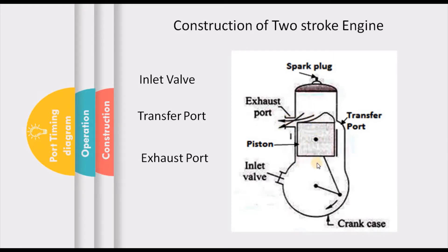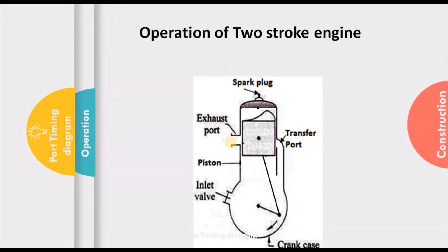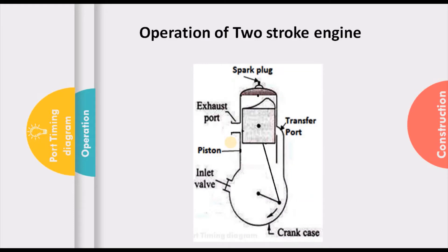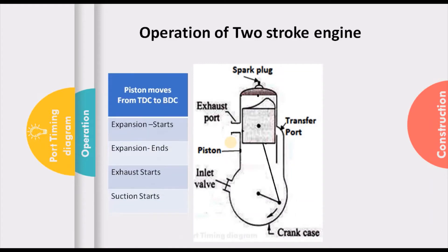The three important points here are: the inlet valve, the transfer port opening and closing, and the exhaust port opening and closing. These are the important parts involved in the combustion cycle. So let us now discuss about the operation of a two-stroke engine.